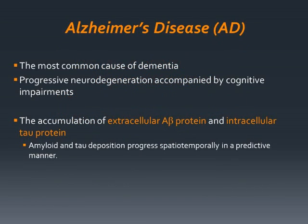Alzheimer's disease, the most common cause of dementia, is characterized by progressive neurodegeneration accompanied by cognitive impairments that interfere with activities of daily living and ultimately impose heavy economic burdens on the patient and family. It occurs by the accumulation of extracellular beta-amyloid protein and intracellular tau protein, which deposit in the brain, especially temporally, in a predictive manner, and this pattern of accumulation can be observed by structural MRI.